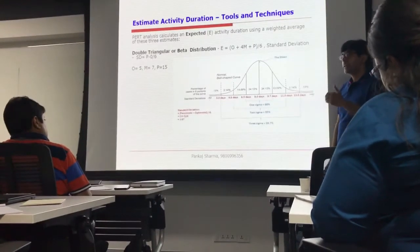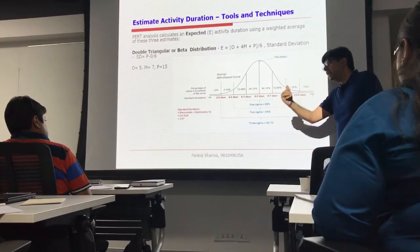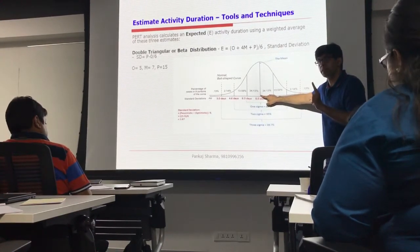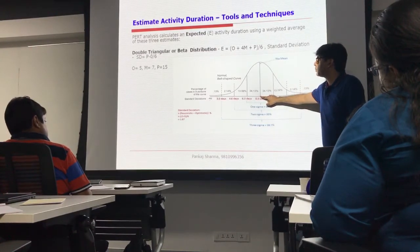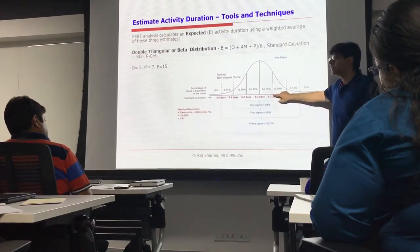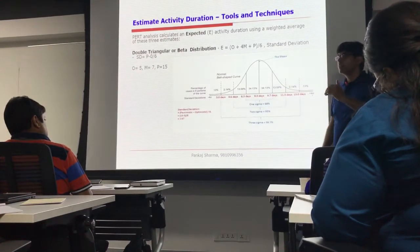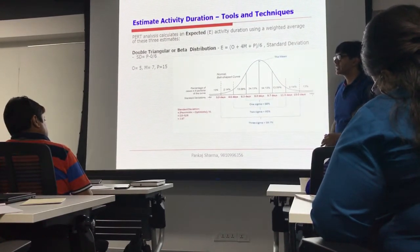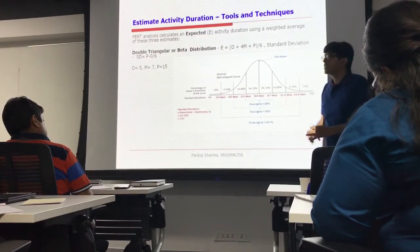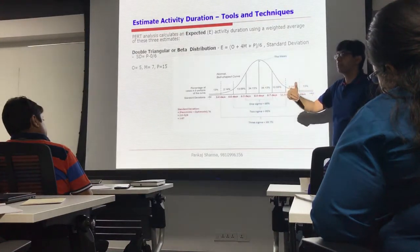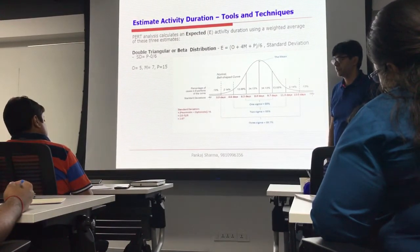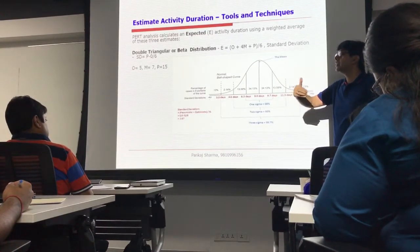Now let's see how this sigma value can give us the risk associated with time. 8 days is the expected time. If I take 8 plus 1 sigma — the standard deviation is 1.67 for this project — then 8 plus 1.67 is 9.67. Taking an approximation, we can use 9.7 days. Similarly, 8 minus 1 sigma is 6.3 days. This tells us the probability of the project being completed in the range of 6.3 to 9.7 days is 68%. This is the confidence level associated with the estimates.